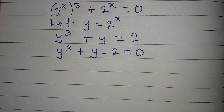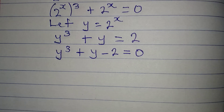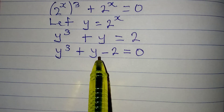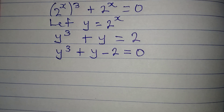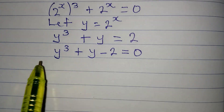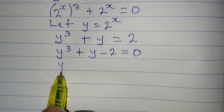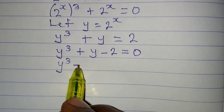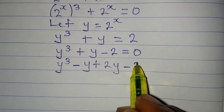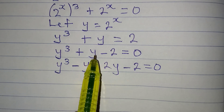We are going to factorize these three terms. They have nothing in common, but we can group them into two pairs by splitting the y term. So we write y³ − y + 2y − 2 = 0. Note that −y + 2y gives +y, so nothing has changed.